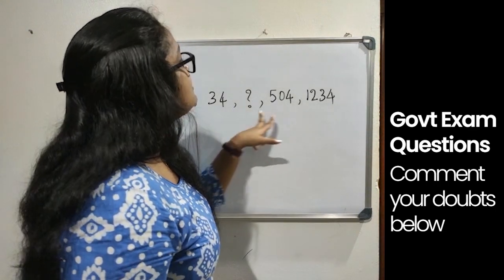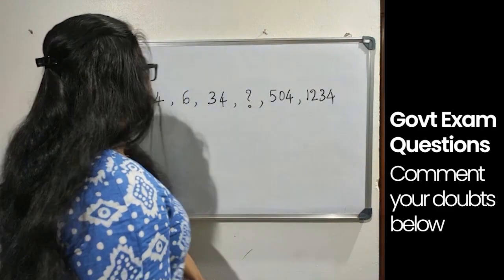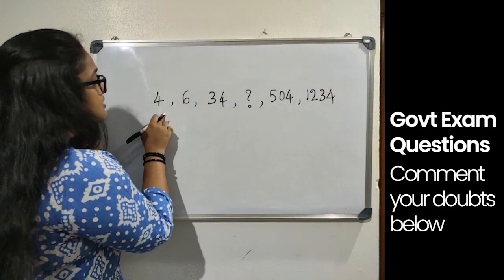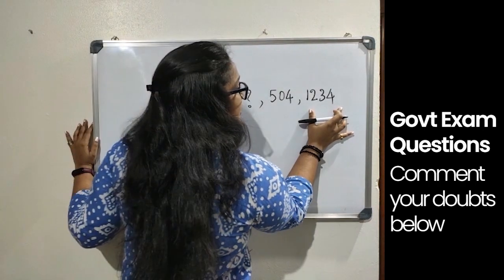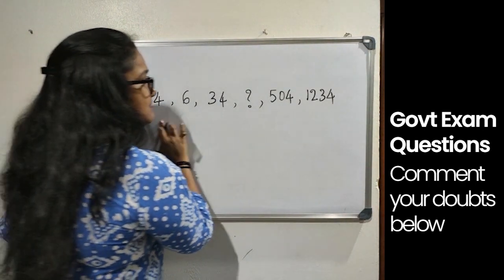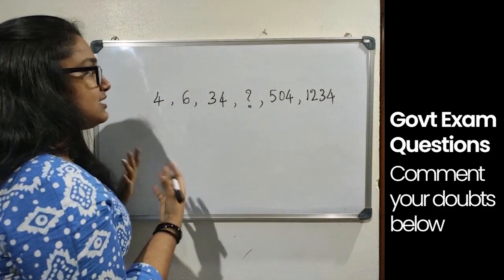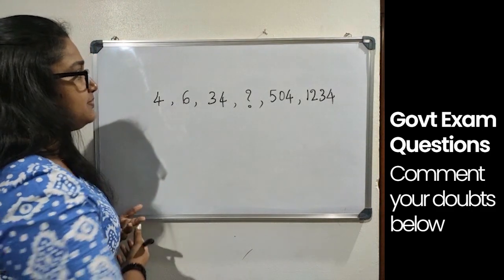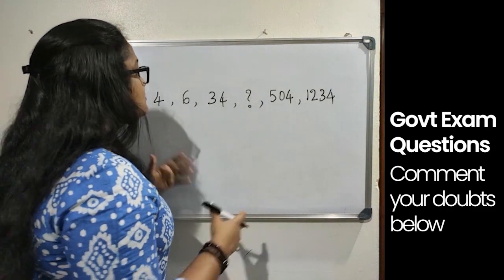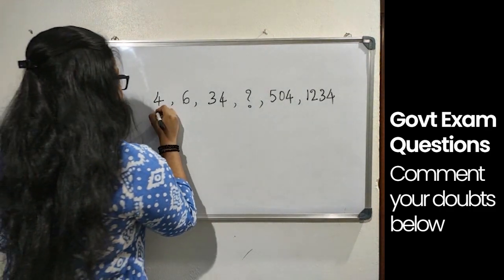The next question has the series: 46, 34, ?, 504, 1234. The first term is a single digit and the last term has four digits, so this is not simple addition or subtraction — it could be a multiplication or power series.